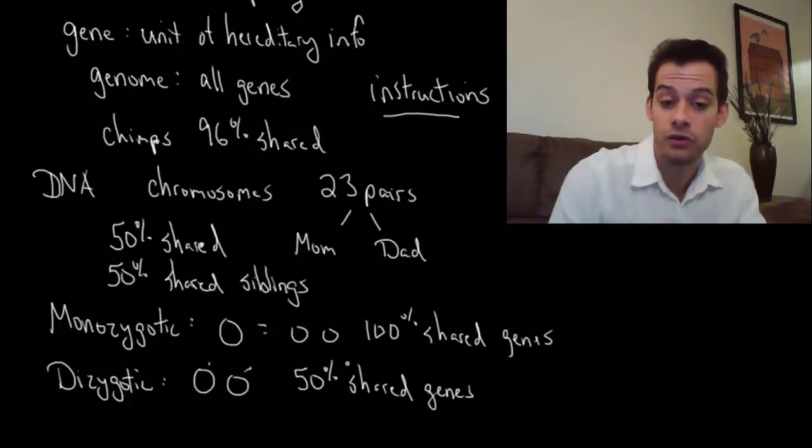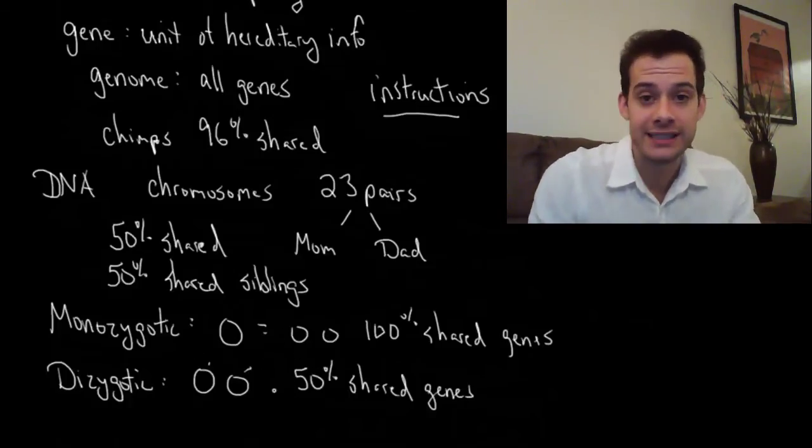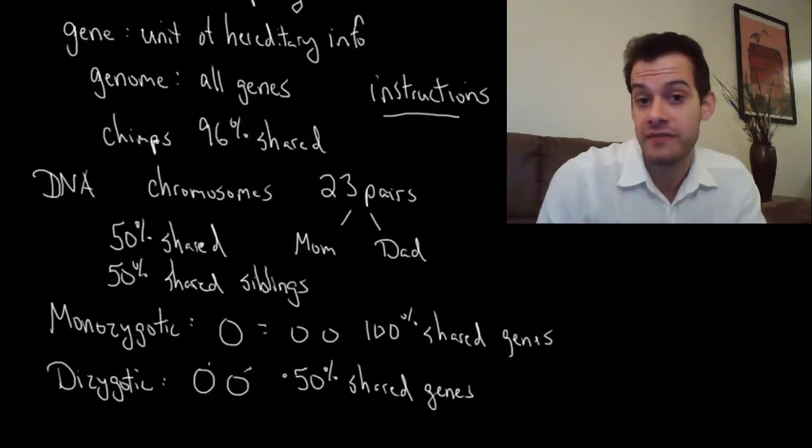So fraternal twins or dizygotic twins are sharing the same amount of genes as any other siblings, about 50% on average.